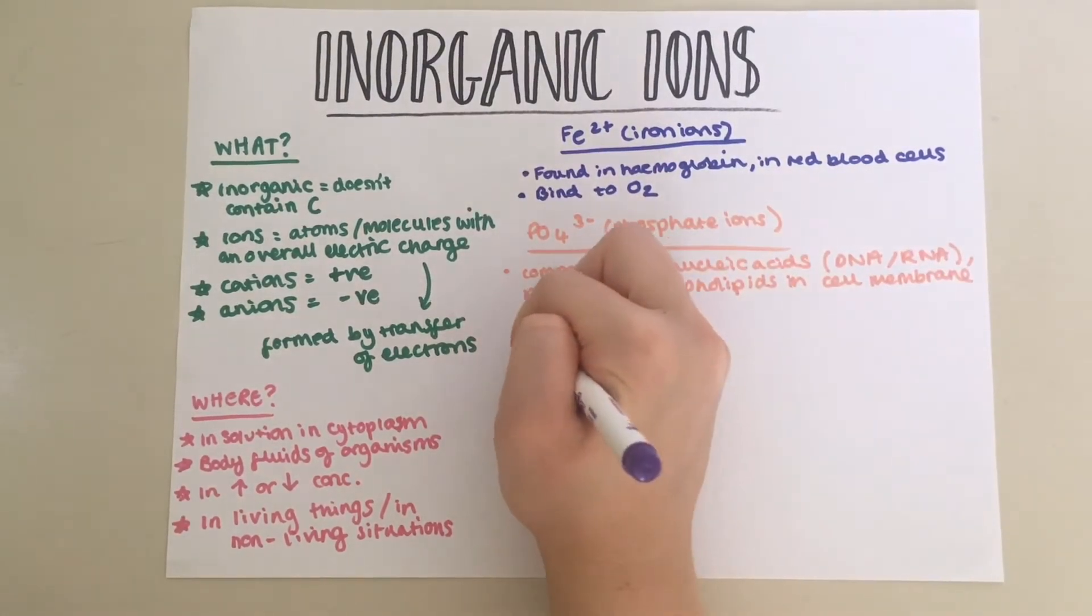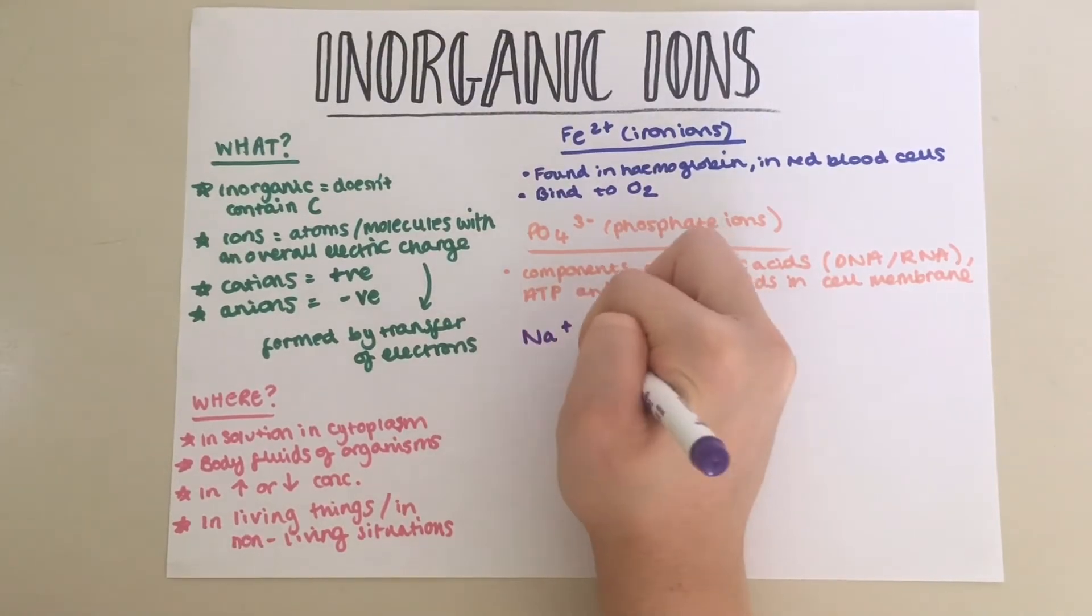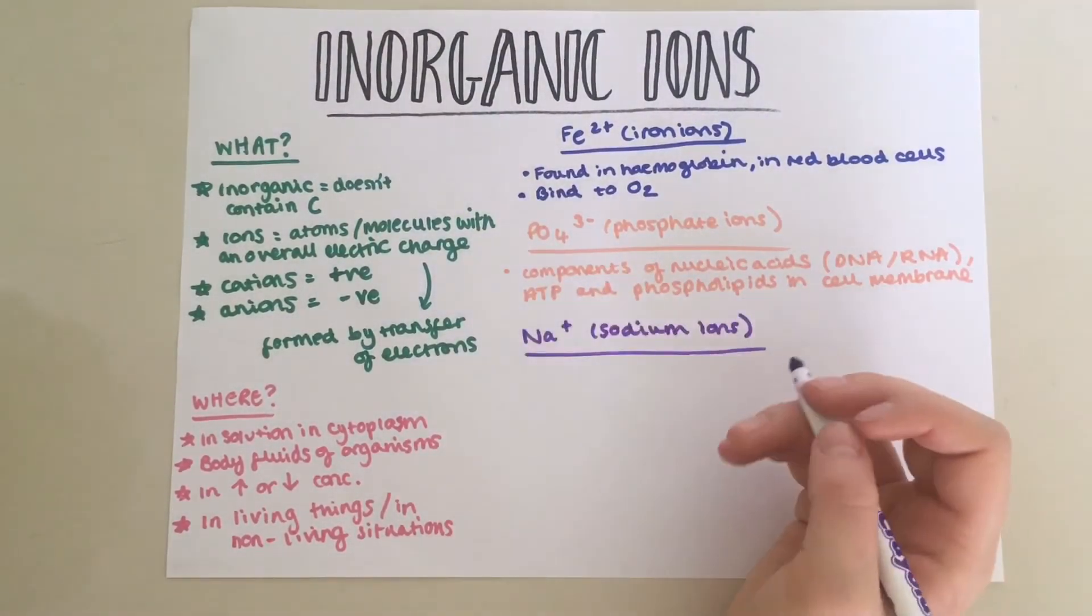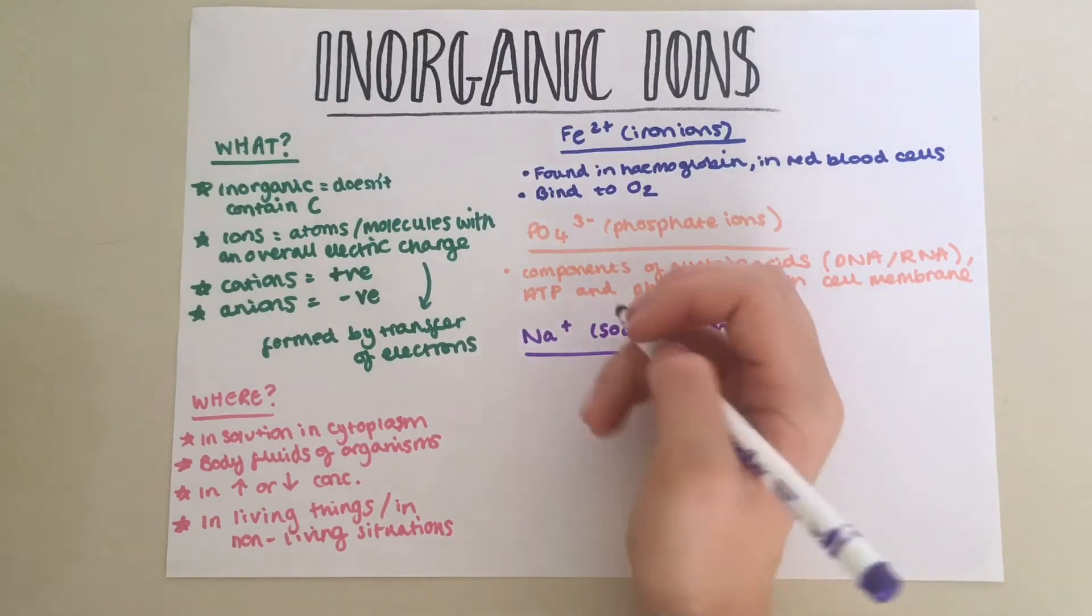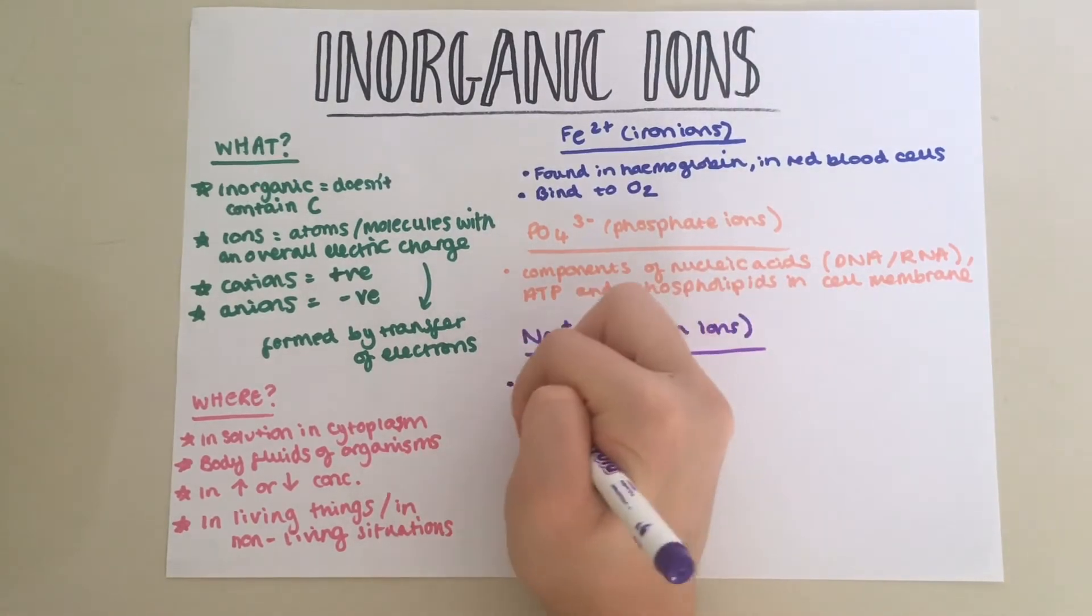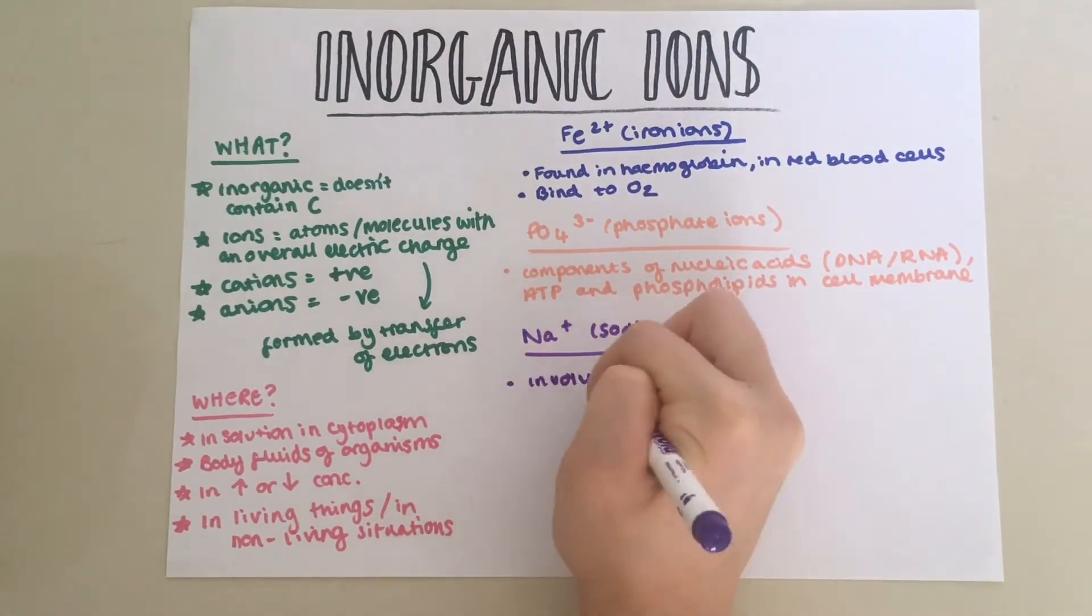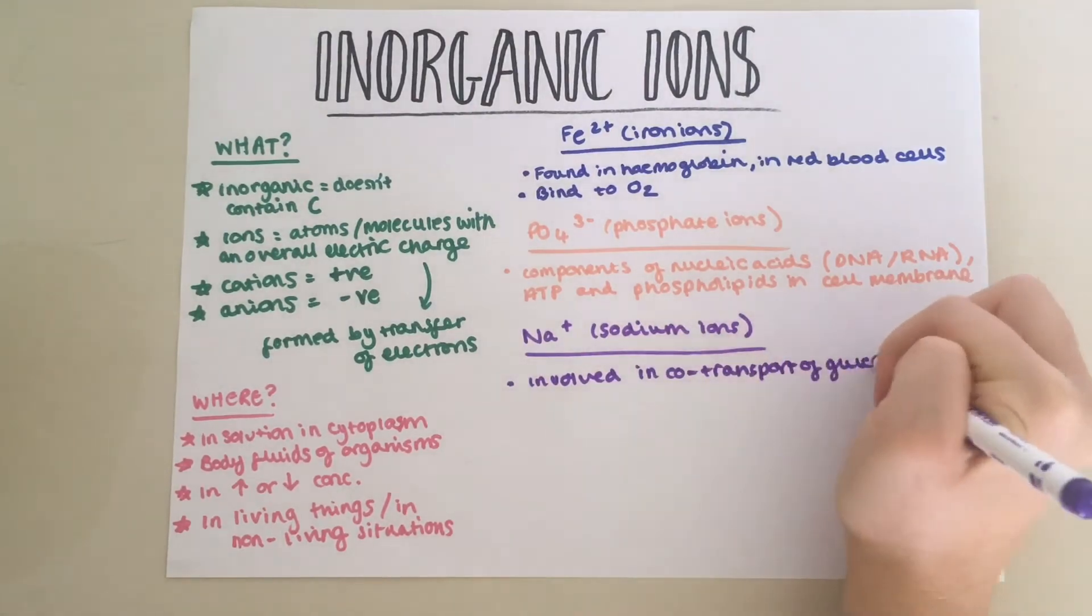There are also sodium ions, Na+. These are involved in the co-transport of glucose and amino acids. You will learn more about this in the Transport Across Cell Membranes topic.